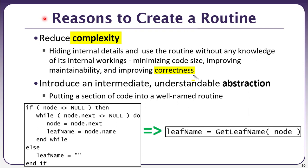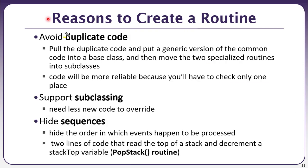Another purpose of creating a function is to introduce an intermediate and understandable abstraction. For example, if working on a tree and we want to get a leaf name, we can create a function called 'get leaf name' and pass the node — that function returns the name. This single line of code is much easier to understand and hides the long lines of code used to retrieve the leaf name, also avoiding duplication when called multiple times.